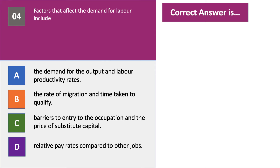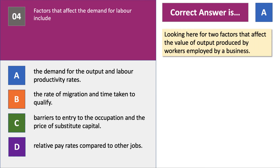Question number 4. Factors that affect the demand for labour — you need to make a distinction between labour demand and labour supply. The right answer is A — two factors affecting labour demand are: the demand for final output, because labour is a derived demand and is employed to produce goods and services sold in markets; and also the productivity of workers, which determines the marginal revenue product. Some factors in B, C, and D refer to labour supply rather than labour demand.